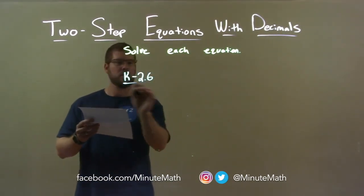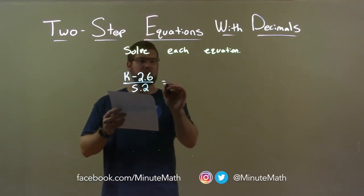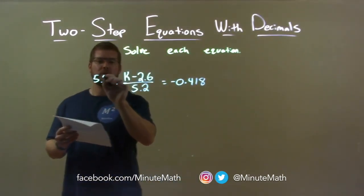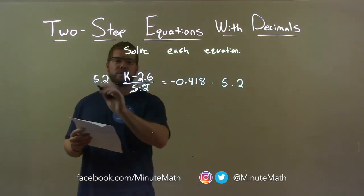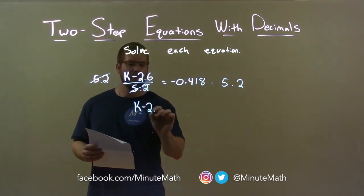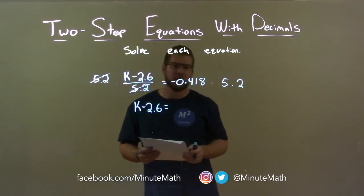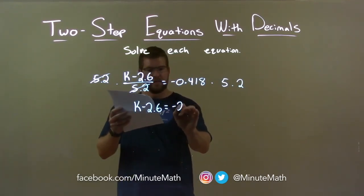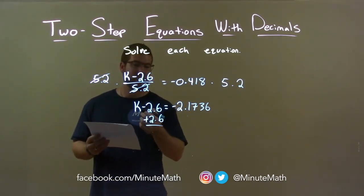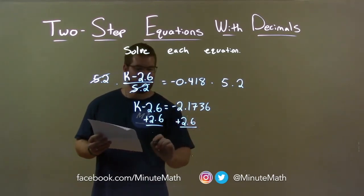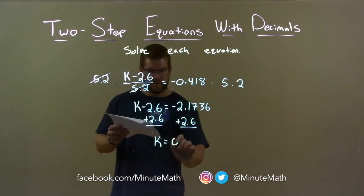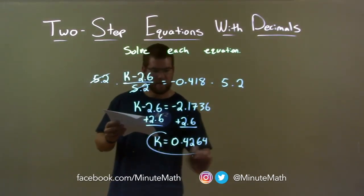K minus 2.6 over 5.2 equals negative 0.418. First thing I want to do is multiply both sides by 5.2. Since I'm dividing by 5.2, multiplying by 5.2 eliminates that denominator, leaving k minus 2.6 in the numerator on the left. On the right, negative 0.418 times 5.2 is negative 2.1736. Now all I have to do is add 2.6 to both sides, because we're subtracting it — so that is addition. Adding 2.6 to both sides leaves k by itself. On the right, negative 2.1736 plus 2.6 is 0.4264. And there we have our final answer.